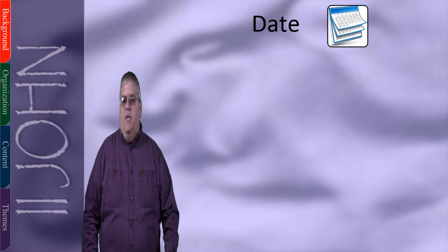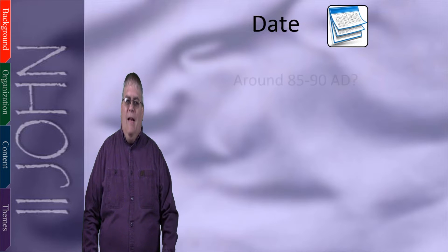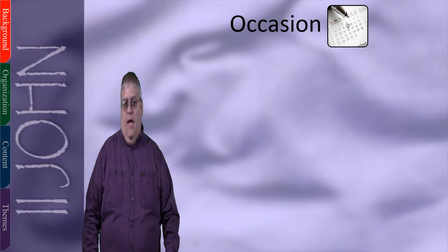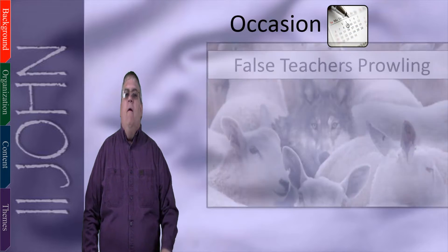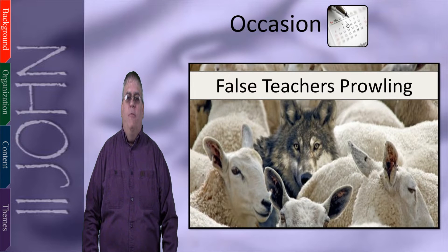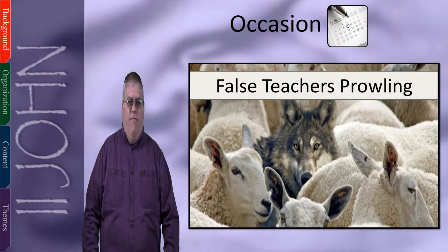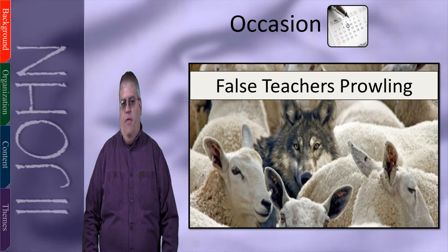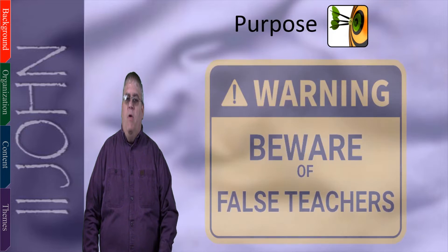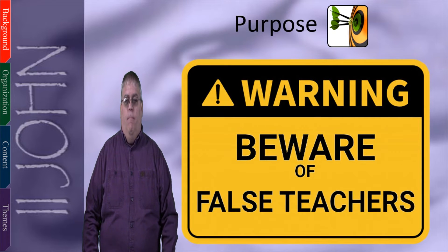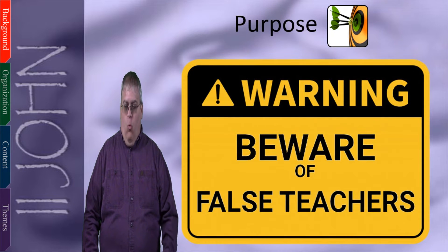The date of this book is similar to 1 John — unknown, but likely around 85 to 90 AD. And the occasion is likewise similar to 1 John. False teachers were around and trying to influence churches. This particular congregation was probably not yet affected, but John was anxious for them. So the purpose was to be a proactive warning that false teachers were coming. John said don't receive them, don't help them, and this is how you will know them. John wanted them to be warned and prepared.